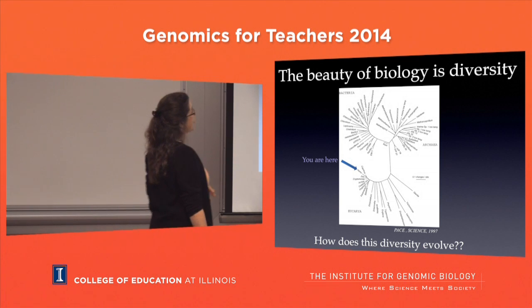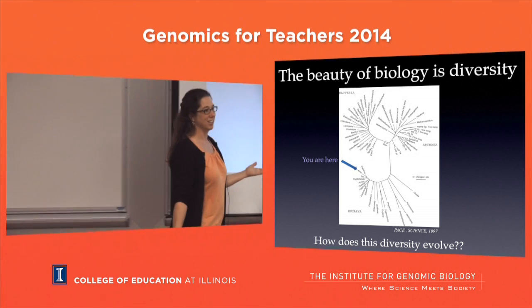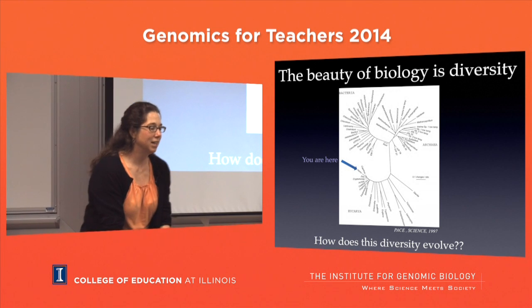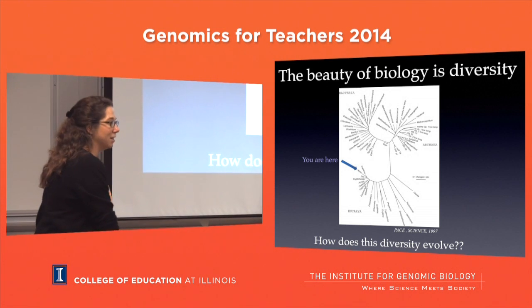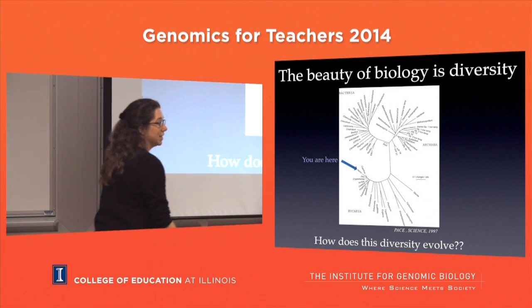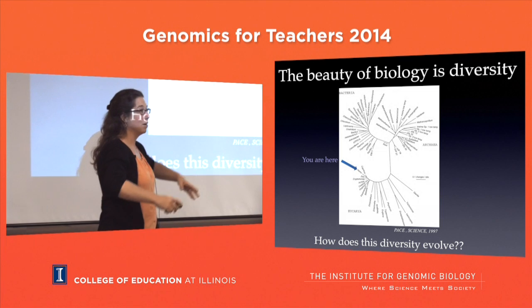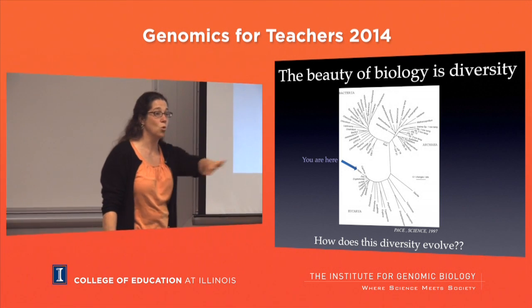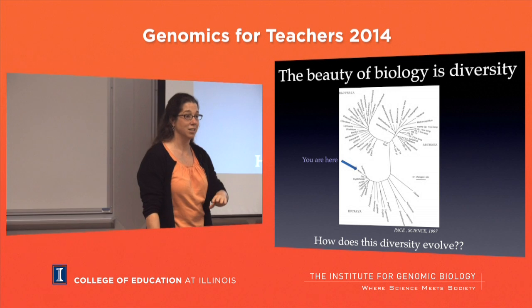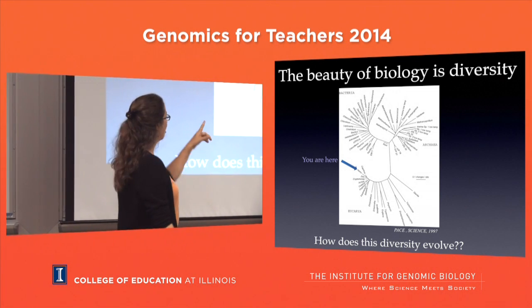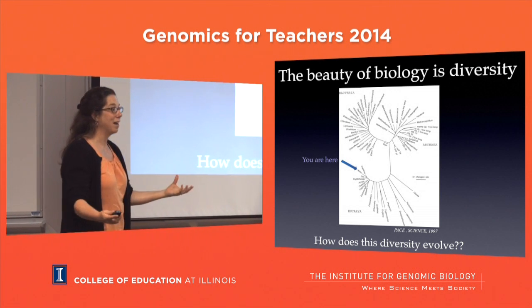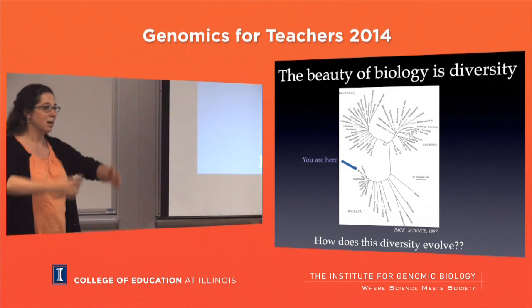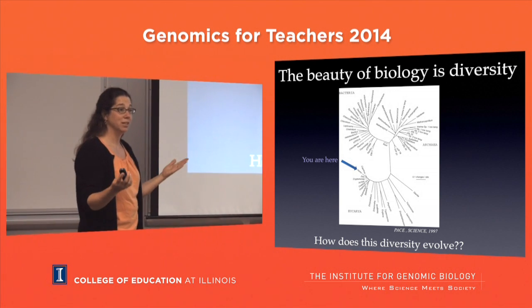It's also not a ladder anymore. It's not like the tiny Monera at the bottom and the higher organisms at the top. This is sampling all current organisms - nothing is more evolved than anything else. We don't have this ladder of evolution anymore.